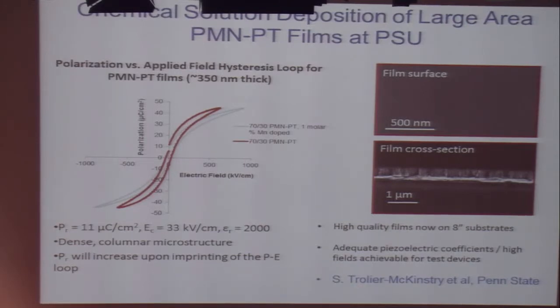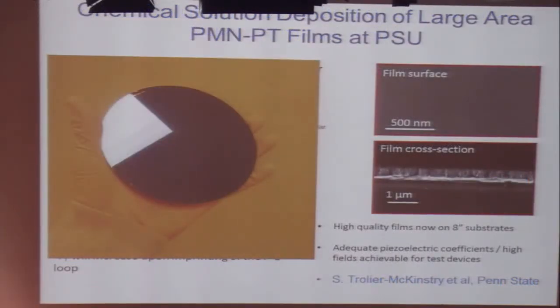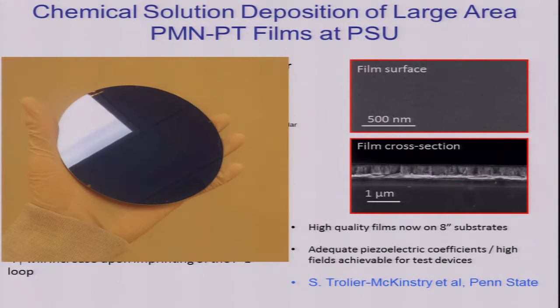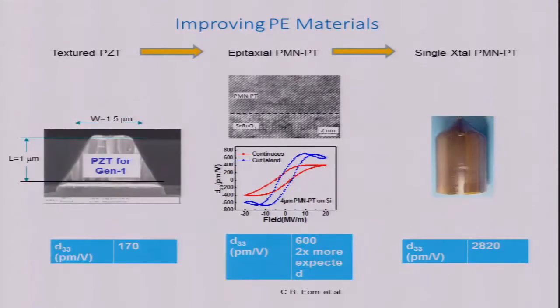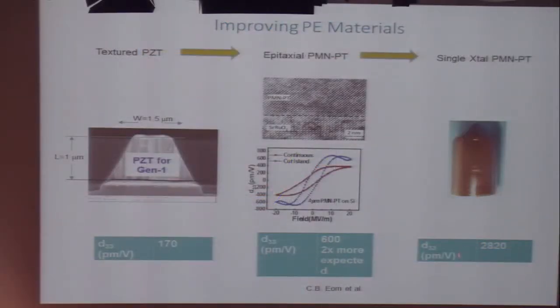Here are some data we're working with another Penn State group Susan Trollier-McKinstry using chemical solution deposition to create large area films and here's a side view you see the extremely textured structures. Those are the large films which we're creating large area. Here's a comparison between the films we're using at the moment with a D33 of 170, these are epitaxial and these are the single crystal so you see we've got a long way to go from where we are now to where we'd like to be at 2800.